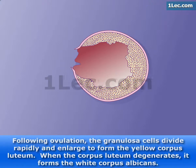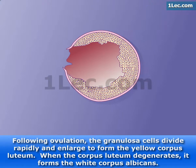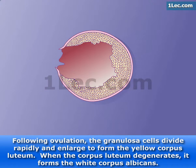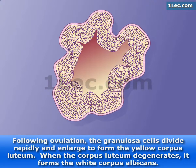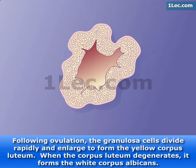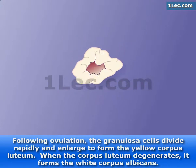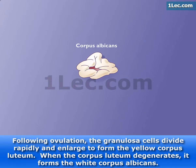Following ovulation, the granulosa cells divide rapidly and enlarge to form the yellow corpus luteum. When the corpus luteum degenerates, it forms the white corpus albicans.